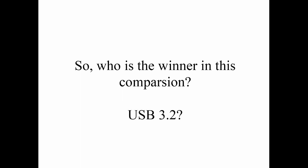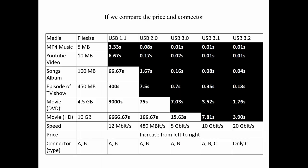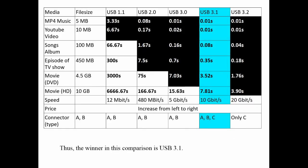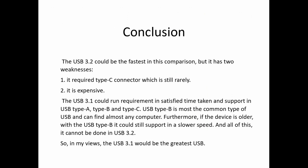So who is the winner in this comparison? If we only consider speed, it is USB 3.2. But if we compare price and connector compatibility, the winner is USB 3.1. USB 3.2 is faster but has two disadvantages: it requires a Type-C connector, which is still not universal and is expensive. USB 3.1 can meet the transfer requirements within acceptable time and supports USB Type-A, Type-B, and Type-C connectors. USB Type-A is the most common type found on almost any computer, and if a device uses an older connector, it can still be supported at a slower speed — which is not possible with USB 3.2. In conclusion, USB 3.1 would be the greatest USB overall.